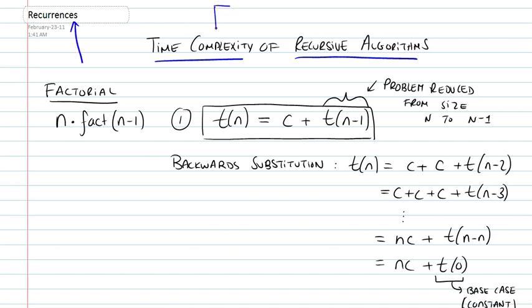A recurrence relationship is basically an equation that defines a sequence, and what it has that's special is that every single term of that sequence is basically defined as a function of preceding terms of the same sequence.